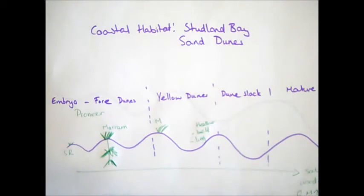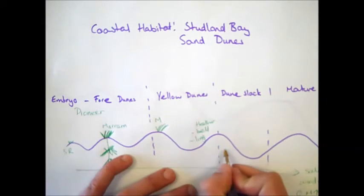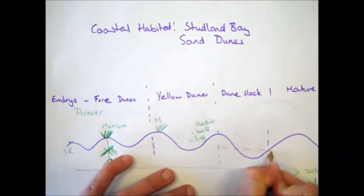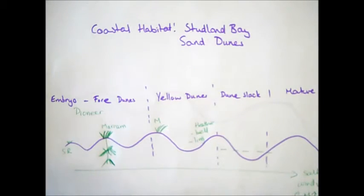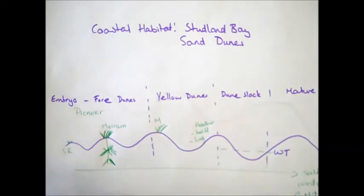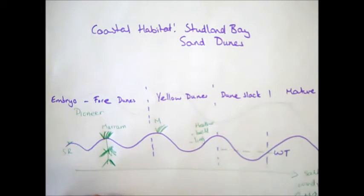We then move into the dune slack. What's important about the dune slack is it's a low part of the dune system. It's a depression, and it is generally below the water table, which is really important. As a result of being below the water table, the conditions in the dune slack are very damp, very moist, and it's also very sheltered because it's down low, so we don't get a huge amount of wind.